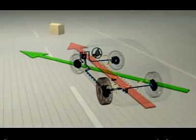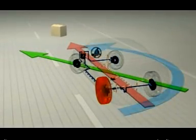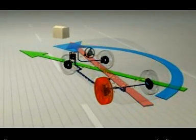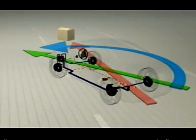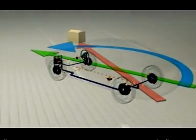In split seconds, ESP brakes the left rear wheel very briefly and sharply. This produces the desired counteracting force so that the car responds as the driver intended.